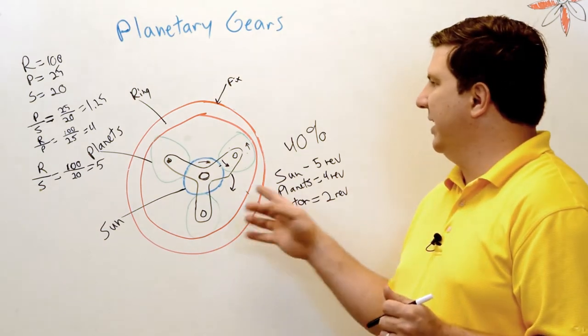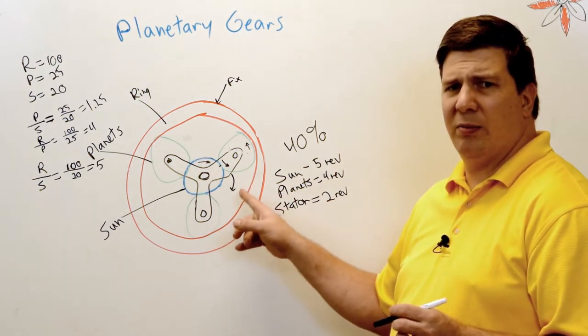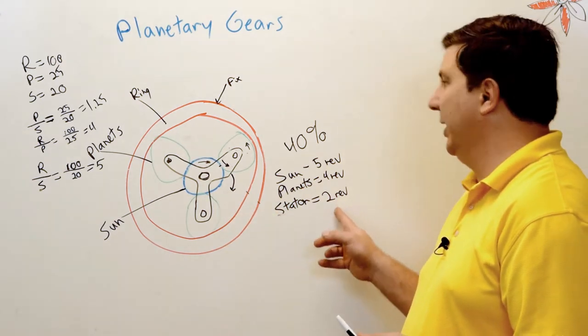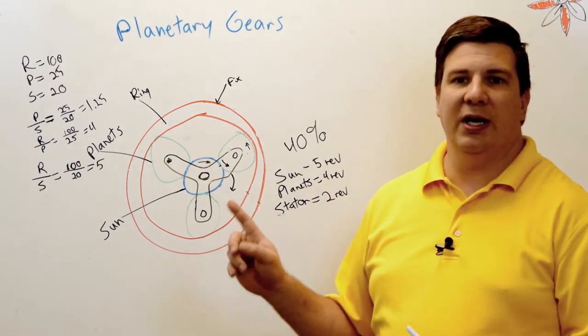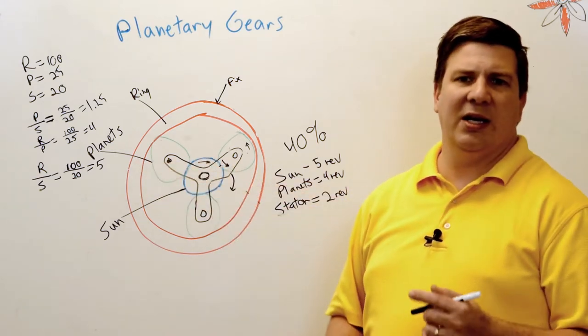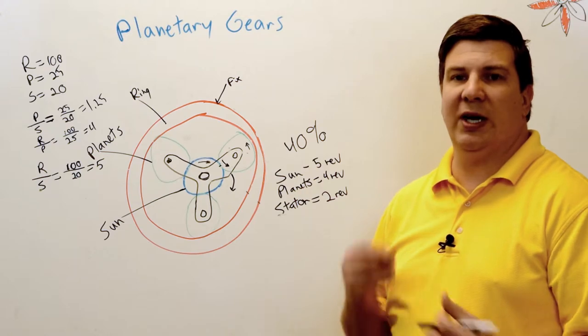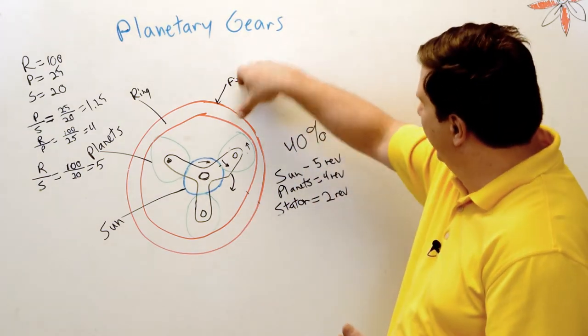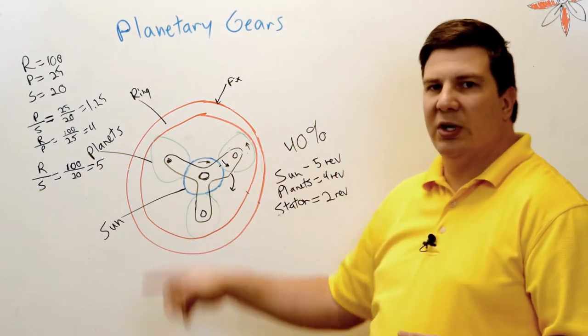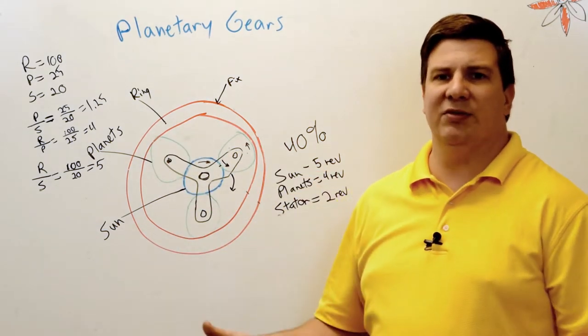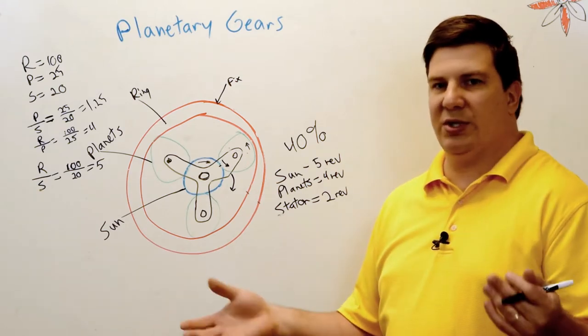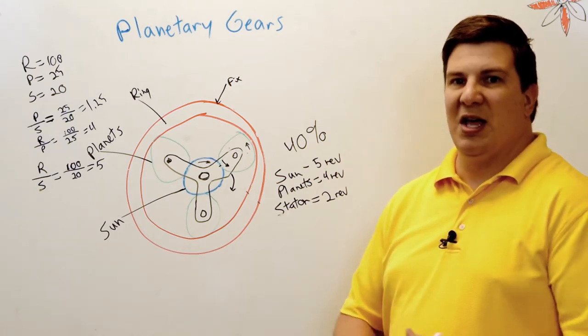So the cool thing about this is not only did I change my ratio - so here I got a two and a half to one output, but I got a five to one before and it's opposite direction - so I can do different things if I just hold this rather than this. I can hold the sun and make the stator go. There's a ton of different combinations you can do with this.